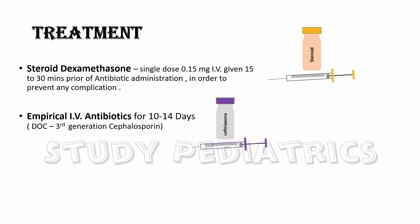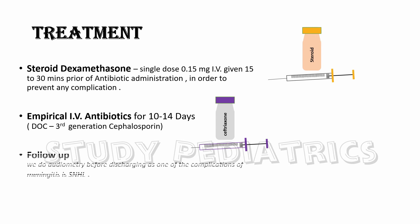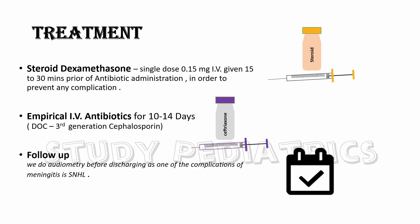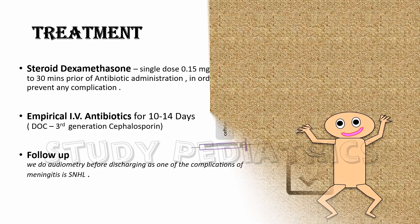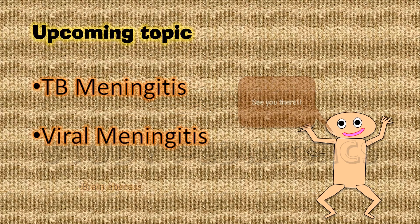Empirical IV antibiotics are given for 10 to 14 days, with the drug of choice being third-generation cephalosporins. The patient is advised proper follow-up — for example, we perform audiometry before discharging, as one complication of meningitis is sensorineural hearing loss (SNHL). Lots more coming up in this section — stay tuned.